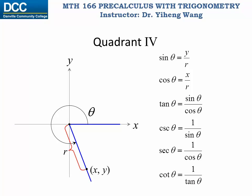Lastly, for angle theta, if its terminal side is in the fourth quadrant, then x is positive but y is negative. Therefore sine theta is negative, cosine theta is positive, tangent theta — being the ratio of one positive and one negative value — is negative. And then cosecant, secant, and cotangent are the reciprocal functions of the previous three, so they have the same signs: negative, positive, and negative.